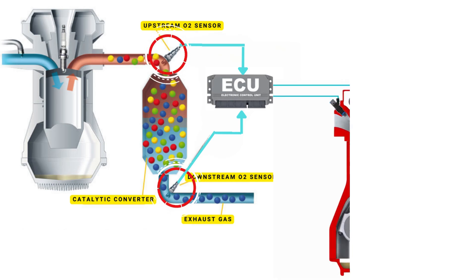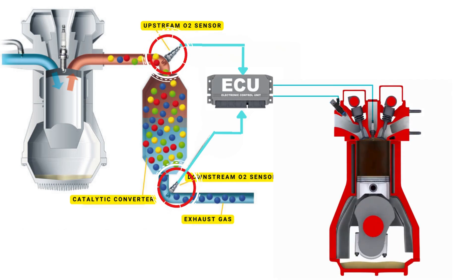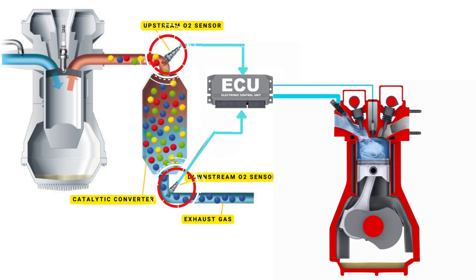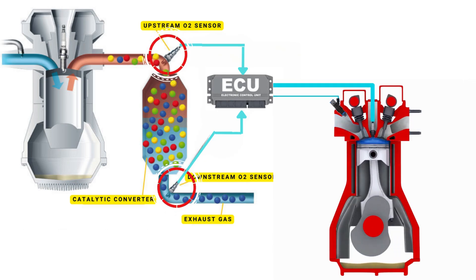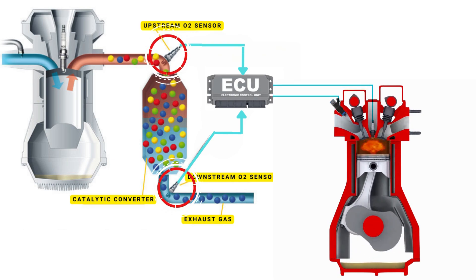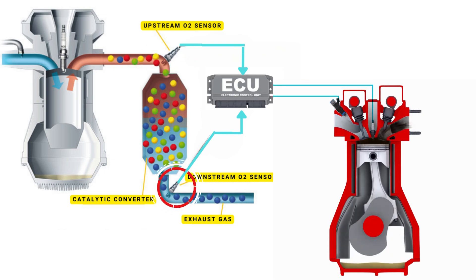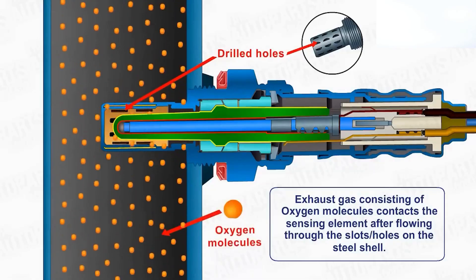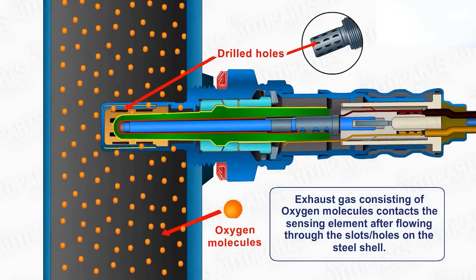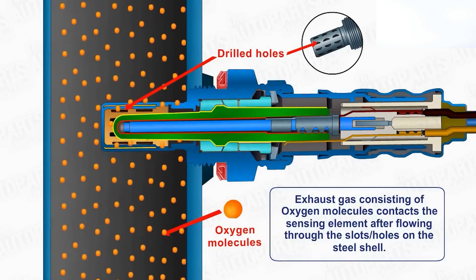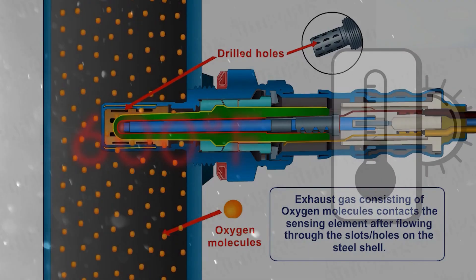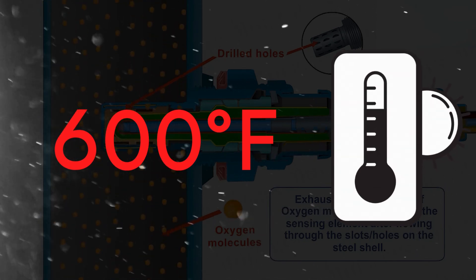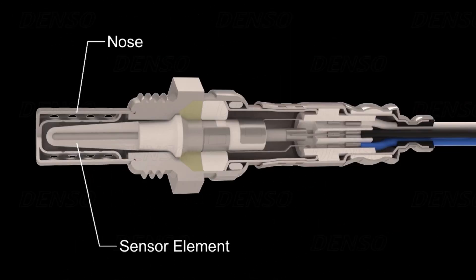The ECU controls the air-fuel ratio by adjusting the timing of the engine's valves, allowing just the right amount of air and fuel to enter the combustion chamber. An oxygen sensor won't function correctly until it's heated to a certain temperature — around 600 degrees Fahrenheit for conventional sensors. That's where the heater circuit comes in — it's designed to warm up the sensor quickly so it starts working sooner.